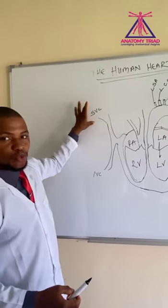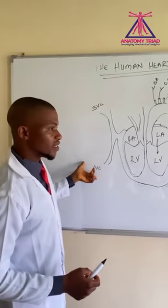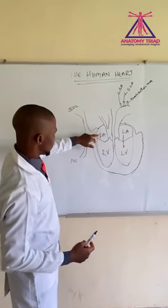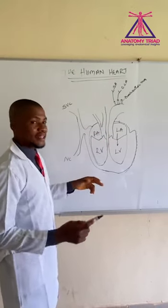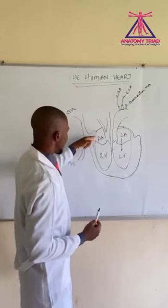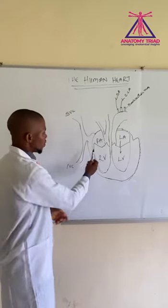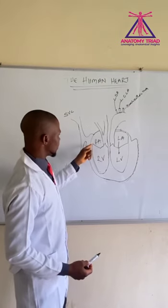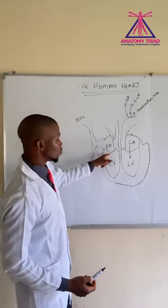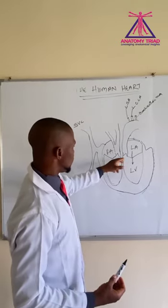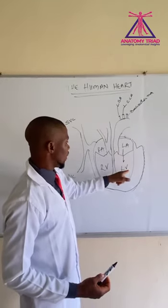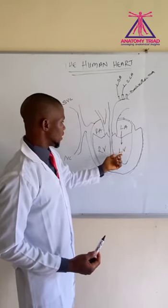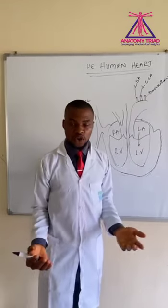This one here is the superior vena cava, and beneath it is the inferior vena cava. The heart is divided into four chambers. Starting from here, we have the right atrium, and beneath the right atrium we have the right ventricle. The valve between the right atrium and the right ventricle is known as the tricuspid valve. Between this one also here, we have the left atrium and the left ventricle. The valve between the left atrium and the left ventricle is known as the bicuspid or mitral valve.